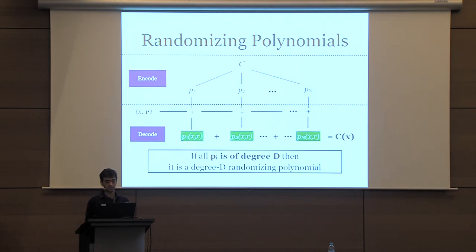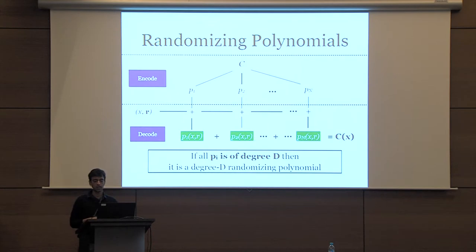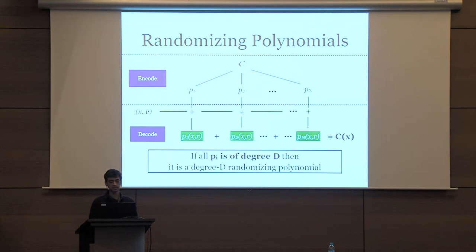The other tool is randomizing polynomials—essentially the same as randomized encodings, except the encoding algorithm is associated with polynomials. The encode algorithm takes as input a circuit C and breaks it into polynomials P1 to Pn. On input X and a random string R, you evaluate P1 to Pn on X,R, and the result is the randomizing polynomial of C,X. A decode algorithm takes as input the output of all these polynomials and outputs C of X. We define degree-D randomizing polynomials to be ones where all polynomials are of degree at most D.